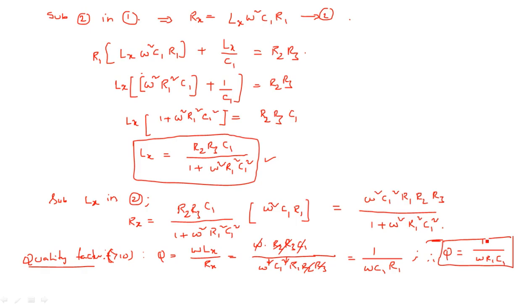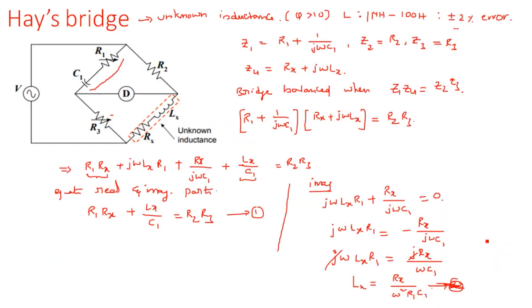The only thing needed is the formula Z1·Z4 equals Z2·Z3. To summarize: in Maxwell's Bridge, capacitance and resistance are in parallel, whereas in Hay's Bridge, capacitance and resistance are in series in the first arm. The rest of all the arms are common between the two bridges.